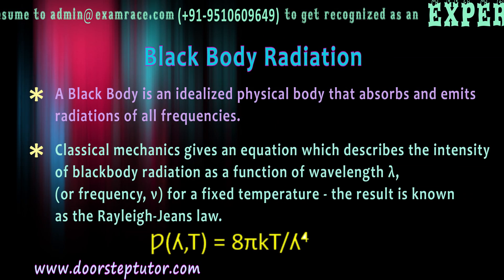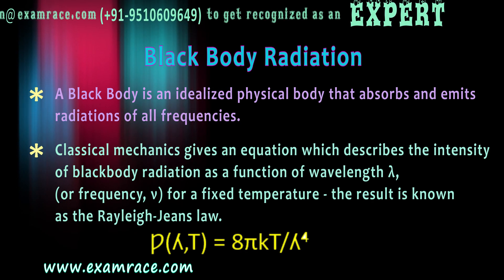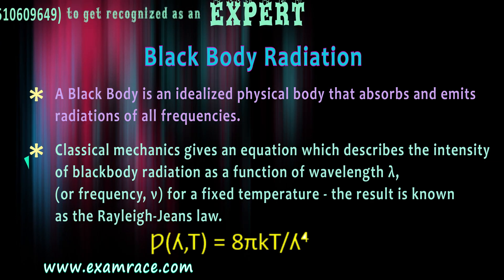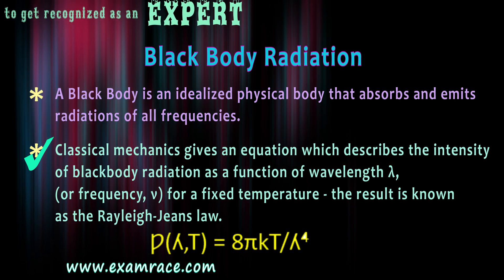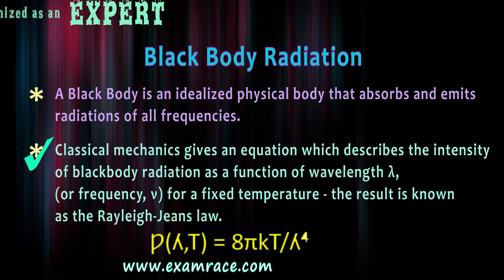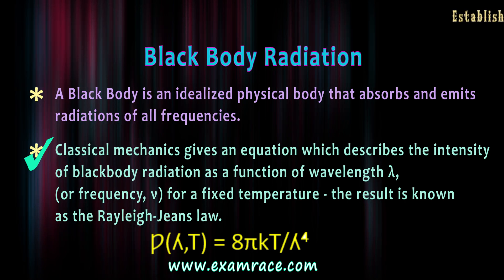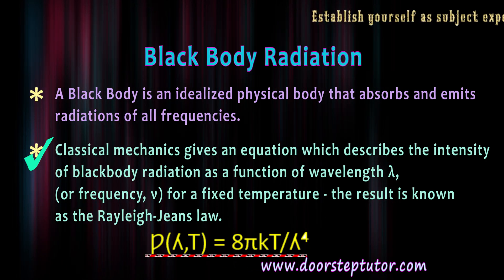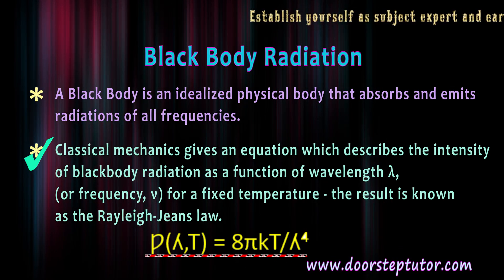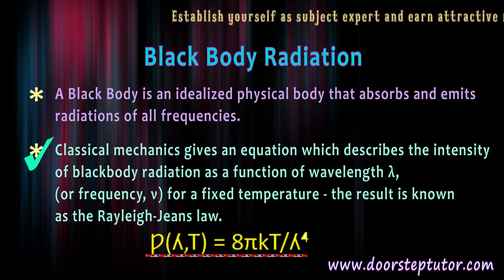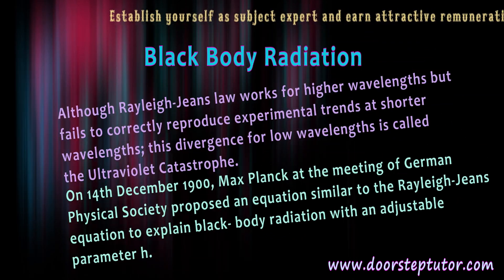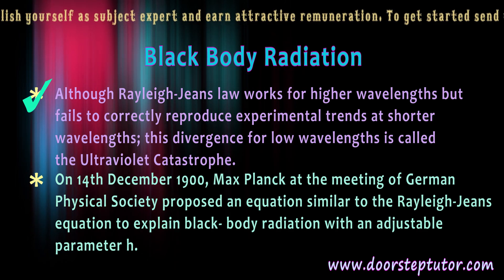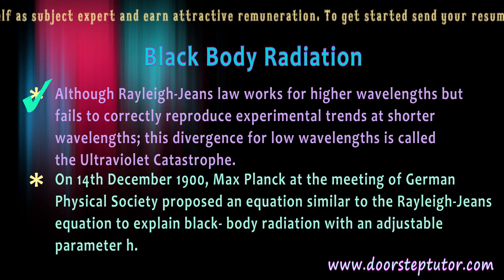Let's study these phenomena one by one. First is black body radiation. A black body is an idealized physical body that absorbs and emits radiation of all the frequencies. Classical mechanics gives an equation which describes the intensity of black body radiation as a function of wavelength lambda and frequency for a fixed temperature. The result is known as the Rayleigh-Jeans law. Although the Rayleigh-Jeans law works for higher wavelengths, it fails to correctly reproduce experimental trends at shorter wavelengths. This divergence for low wavelengths is called the ultraviolet catastrophe.